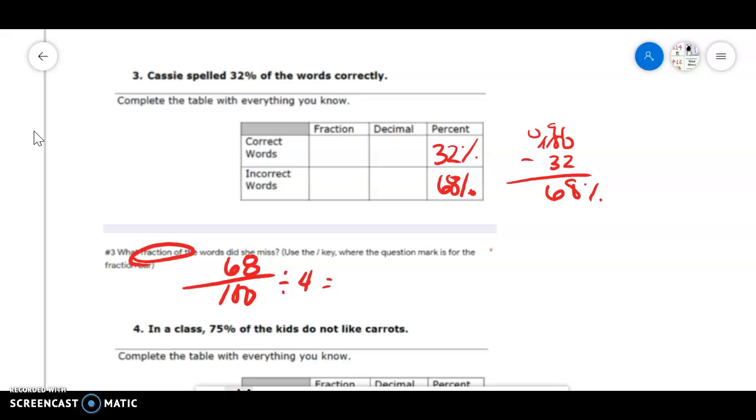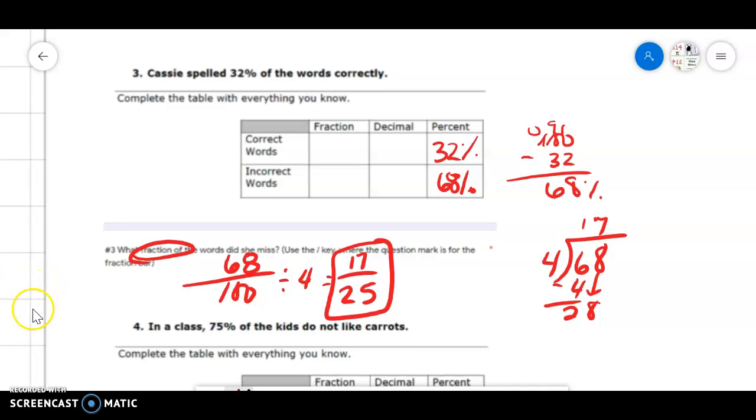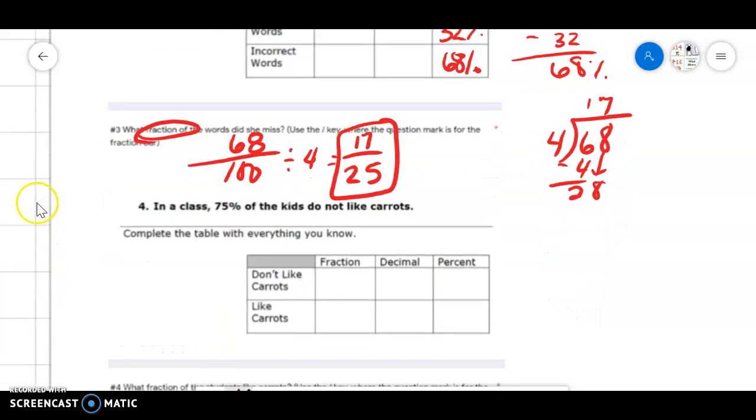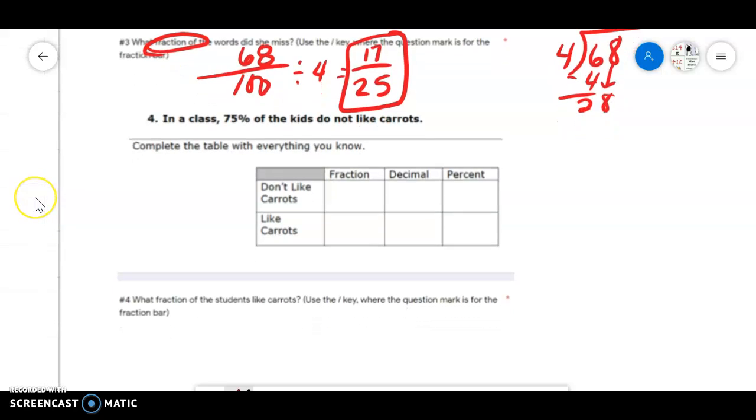We can simplify both of those by four, I believe. If I wanted to do four into 68, I would get 17, and 100 divided by four is 25. So 17 over 25 is what I was looking for. Some of you did simplify by two and you told me 34 over 50, but you need to make sure you simplify all the way down.